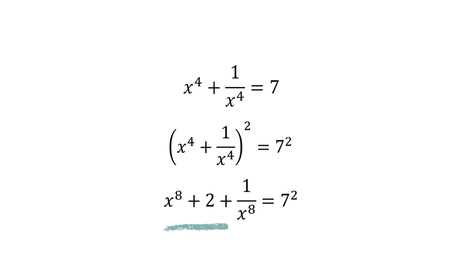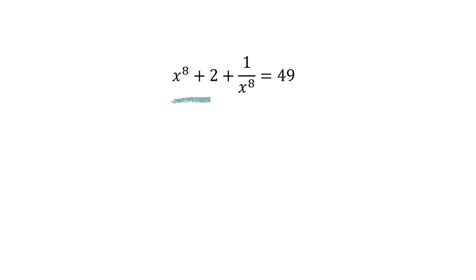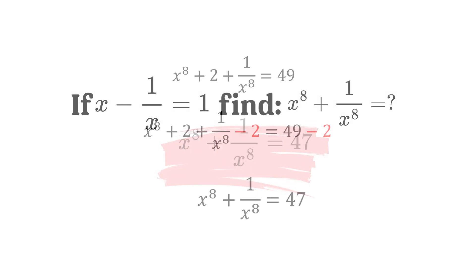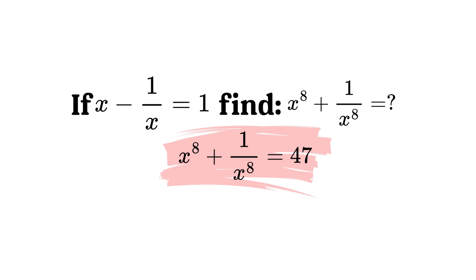This gives us x to the 8th plus the number 2 plus 1 over x to the 8th power. Now we just need to calculate 7 squared, which is 49. So x to the 8th plus 2 plus 1 over x to the 8th equals 49. All we have to do is subtract that final 2. And there is our answer: x to the 8th plus 1 over x to the 8th equals 47.